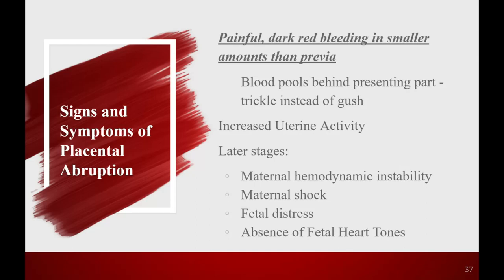You see increased uterine activity. Like in stop-the-bleed training where you put pressure on bleeders, the uterus tries to do the same thing — it contracts to put pressure on the blood vessels that are oozing out mom's blood every minute. Uterine activity starts off as irritability and progresses to hypertonic contractions until you get a rigid, board-like abdomen. Later stages: maternal hemodynamic instability. The pulse is the first thing to go — tachycardia first, then blood pressure drops — eventually progressing toward cardiovascular collapse and maternal shock.